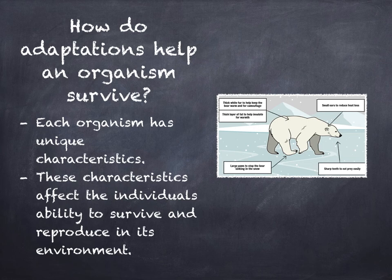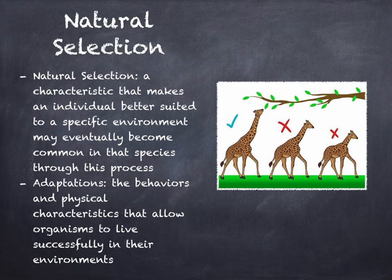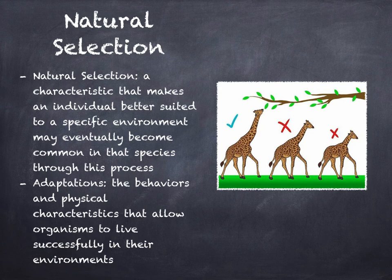Each organism has unique characteristics. These characteristics affect the individual's ability to survive and reproduce in its environment. A characteristic that makes an individual better suited to a specific environment may eventually become common in that species through a process called natural selection. Individuals whose unique characteristics are well-suited for an environment tend to survive and produce more offspring. Offspring that inherit these characteristics also live to reproduce. In this way, natural selection results in adaptations.